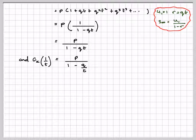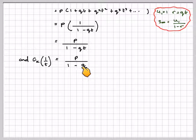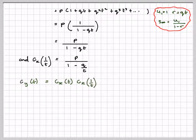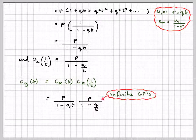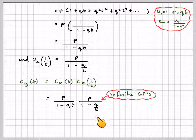And g_X(1/t) = p/(1 - q/t). So g_Y(t) = g_X(t) · g_X(1/t) = [p/(1 - qt)] · [p/(1 - q/t)].